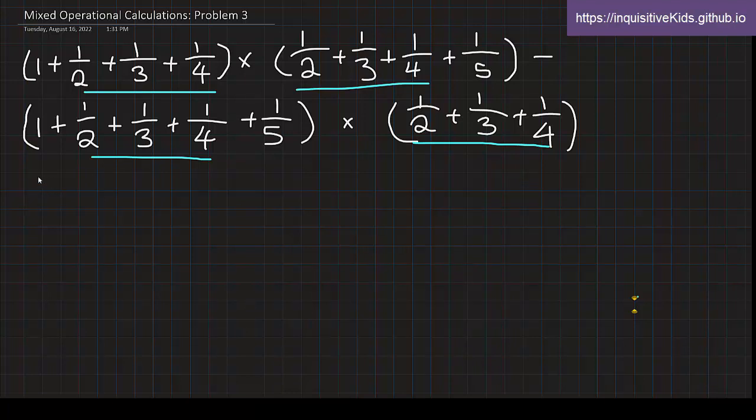And then we will have the new equation expression, which is one plus a times a plus one-fifth minus one plus a plus one-fifth times a. So this, see, all of a sudden it looks way simpler. So this is how we rewrite it.